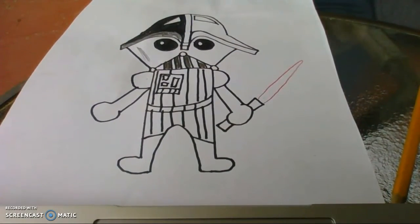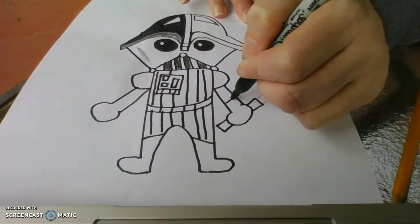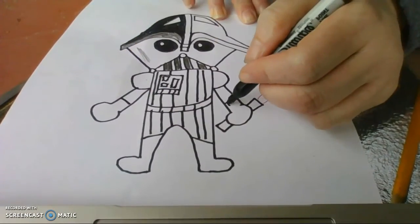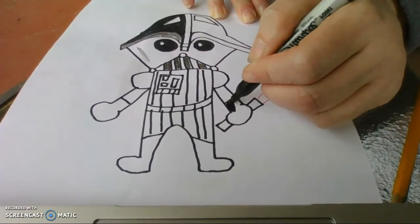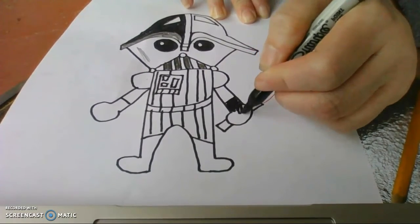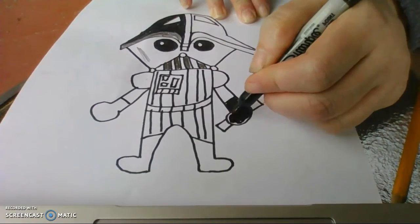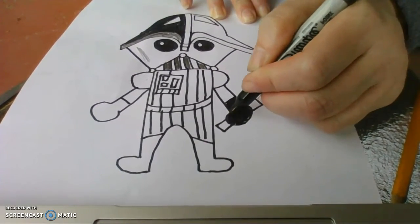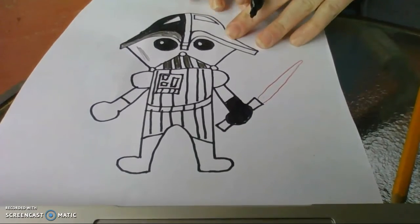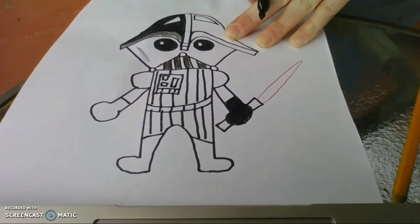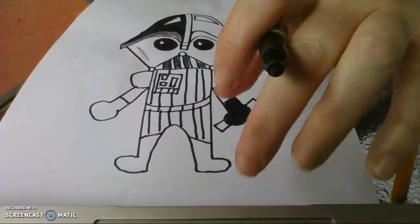Then I'm going to color. I'm going to make a line right here. And these are going to be his gloves. So I'm coloring his gloves in. I'm going to color his boots in black. So I'm going to stop and color this and then I'll come back and we'll talk about it.